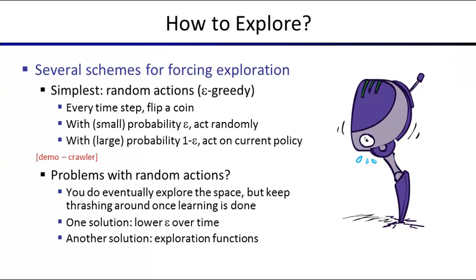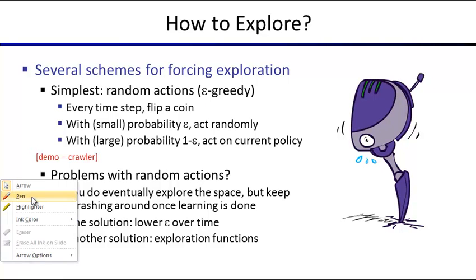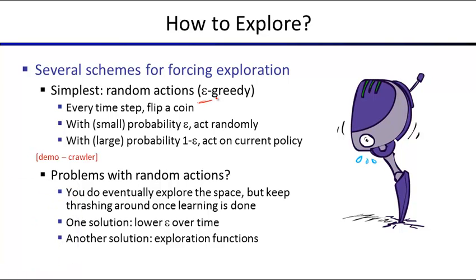To guarantee optimal Q values after running long enough, you need to visit every state-action pair sufficiently often. One approach is epsilon greedy: with probability epsilon take a random action; with probability 1 minus epsilon follow your current Q values. High epsilon means lots of exploration, low epsilon means lots of exploitation.